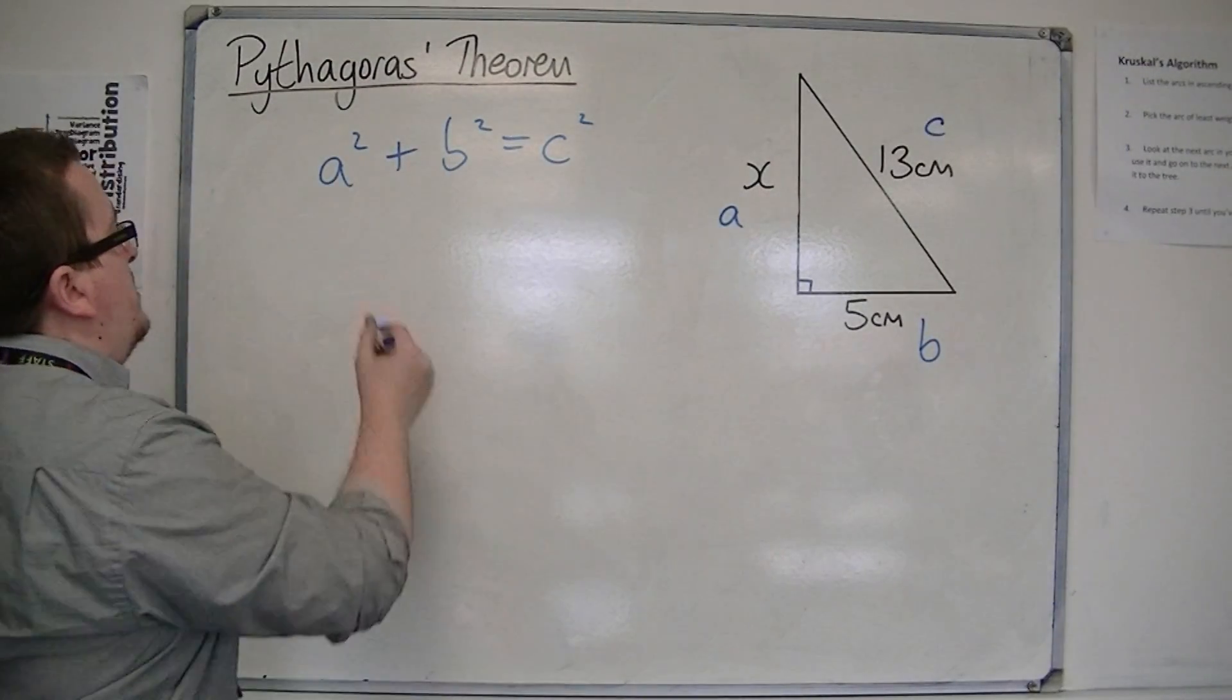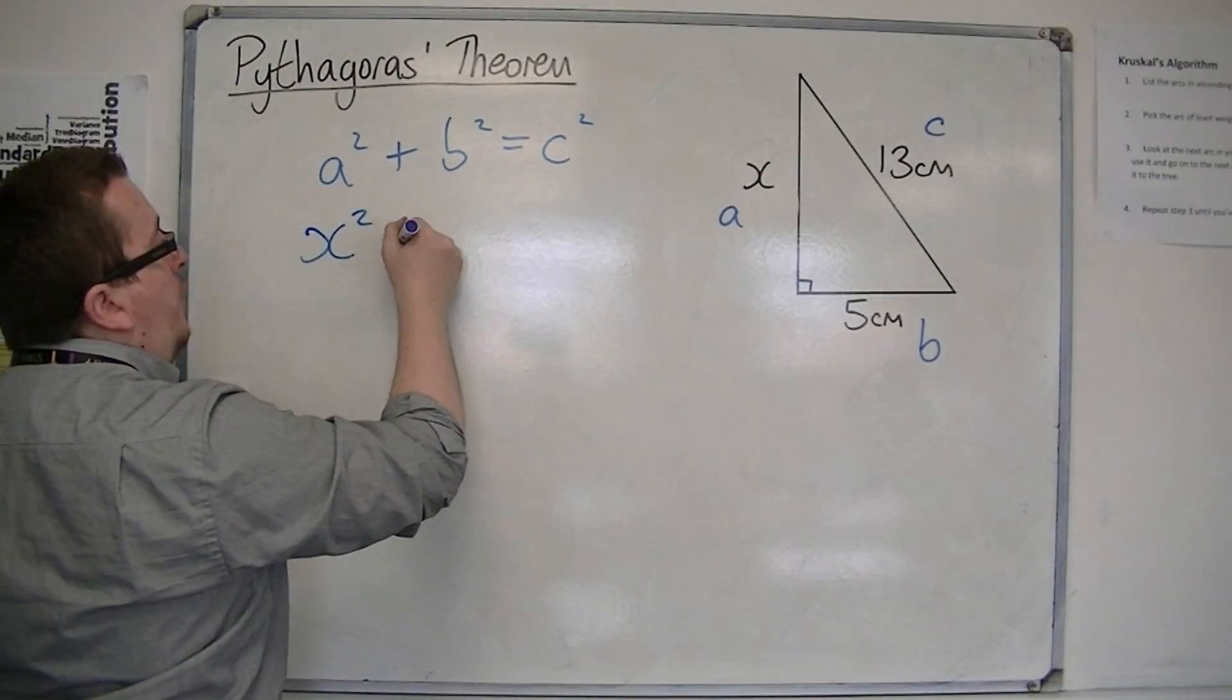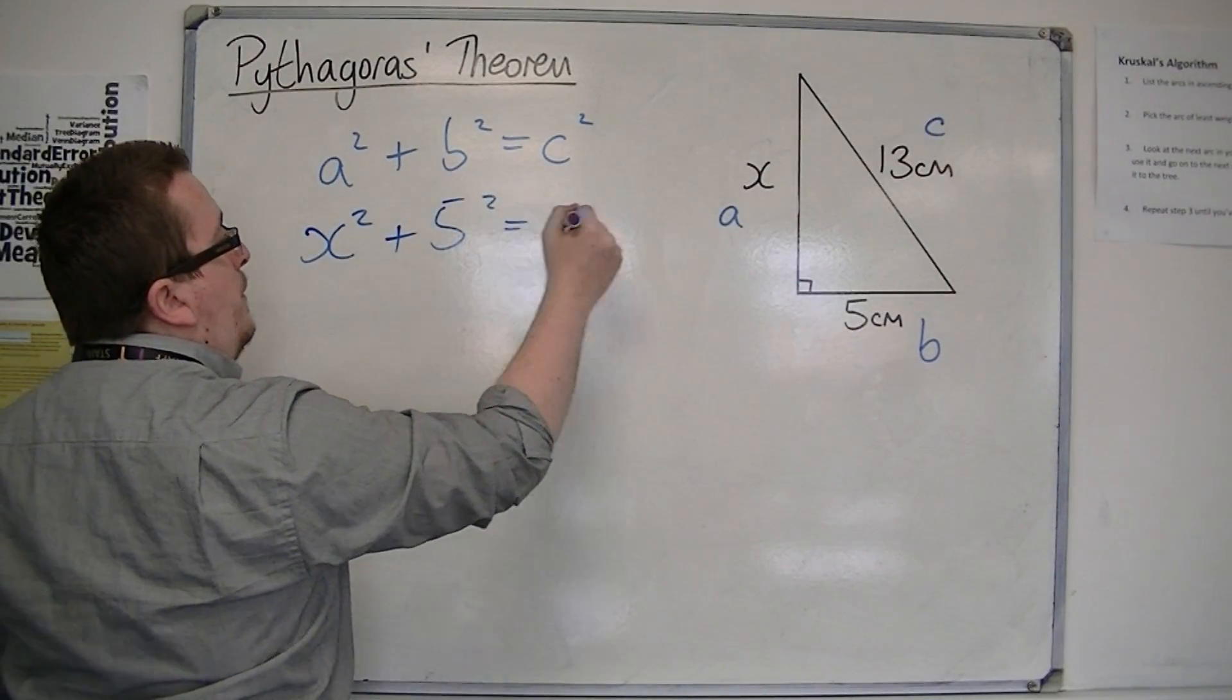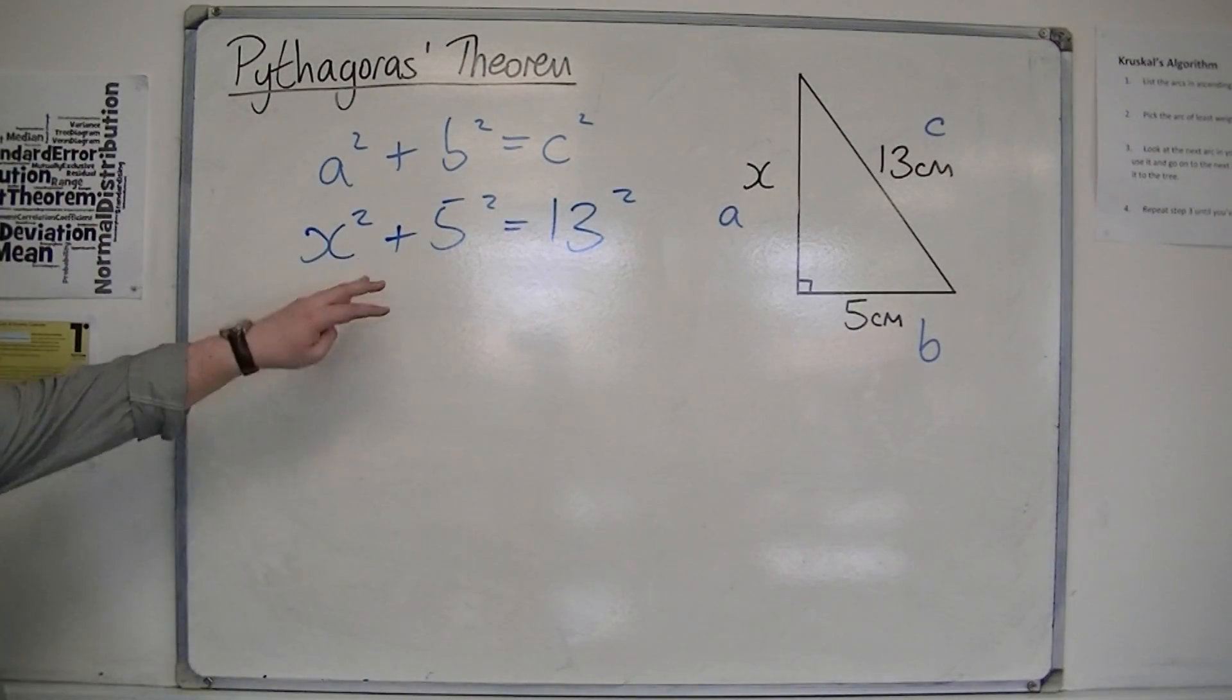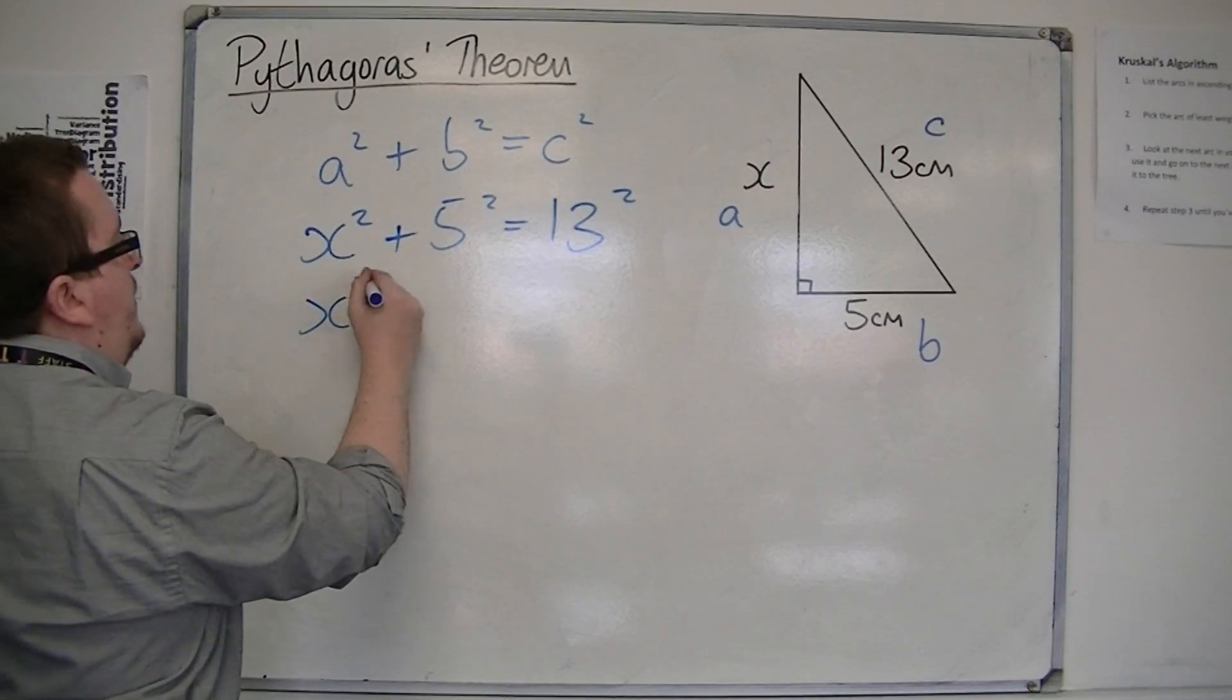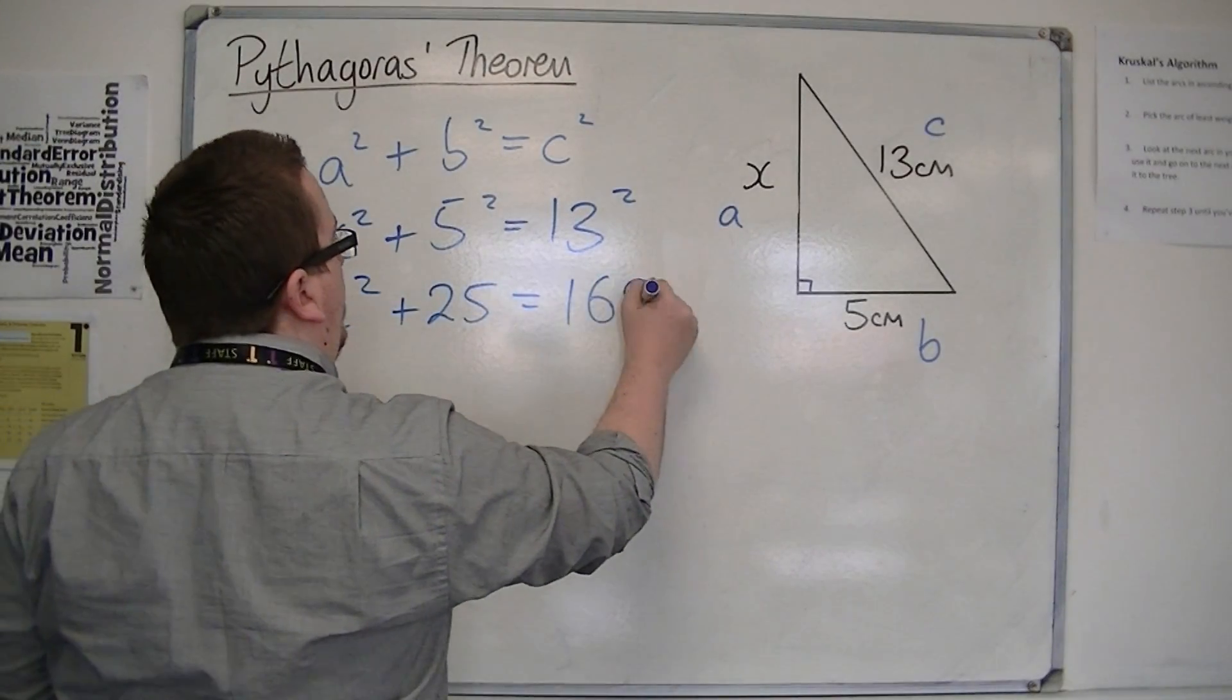So we've got a, which is now x, so x squared. We've got b squared, so that's 5 squared. And we've got 13 as c, so that's 13 squared. So 5 squared is 25, and 13 squared is 169.